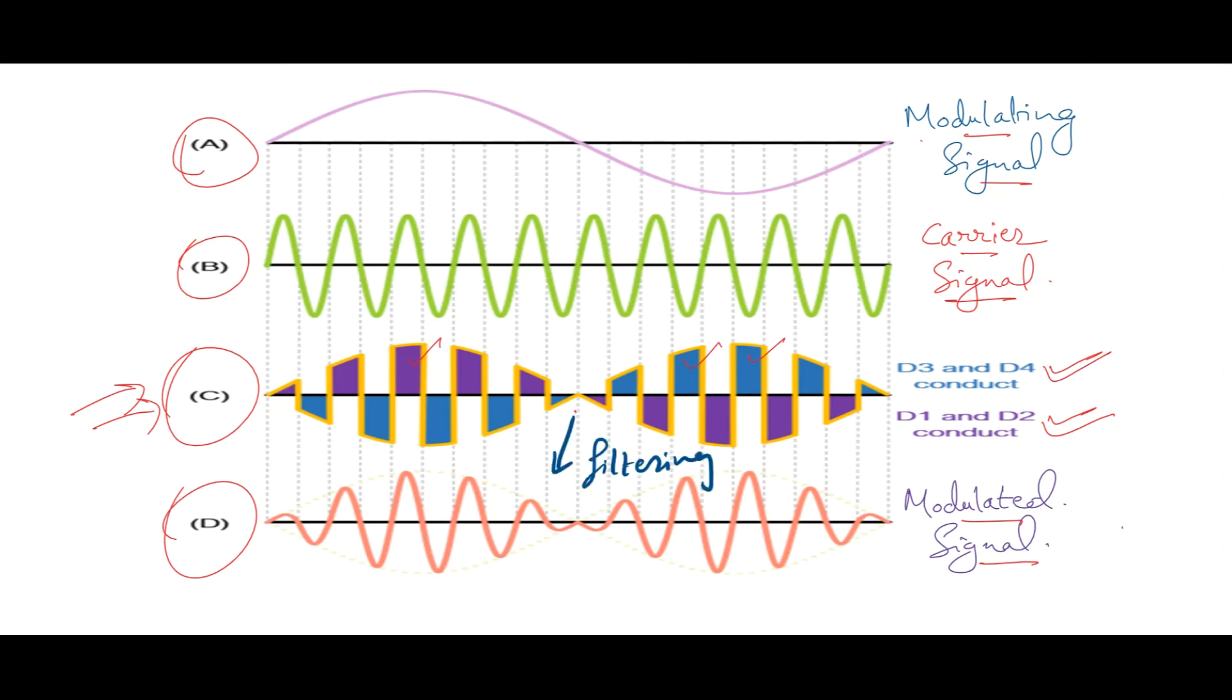Now this waveform C obtained is subjected to filtering operation so that a more smooth output can be observed or obtained. This wave is nothing but the DSB-SC waveform. Here, the maximum amplitude of this modulated wave will be similar to the maximum amplitude of the message signal itself, and the carrier is fully eliminated.